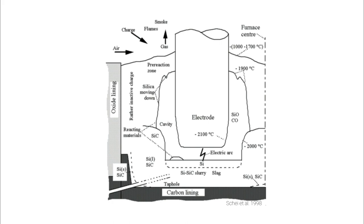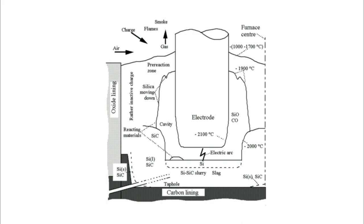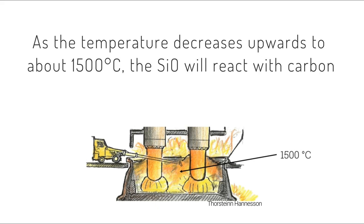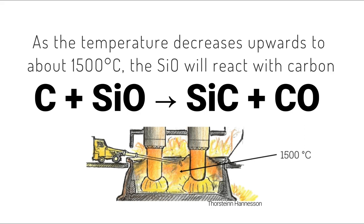The temperature on top of the raw materials is approximately 1000 degrees C. The most important reaction in the so-called low temperature zone is the reaction between carbon and the ascending silicon monoxide gas. As the production of silicon monoxide gas consumes a lot of energy, the energy consumption will have a strong correlation with the silicon monoxide loss out of the furnace. The main role of the carbon added will hence be to capture the silicon monoxide gas before it leaves the furnace.